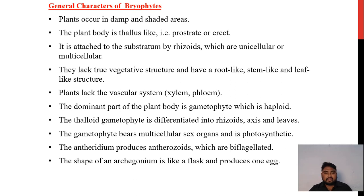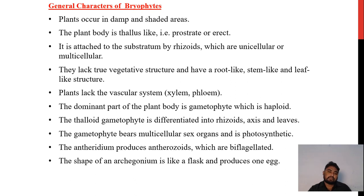The general characteristics of Bryophytes: the plants occur in damp and shaded areas. The plant body is thallus-like, prostrate or erect. It is attached to the substratum by rhizoids which are unicellular or multicellular. They lack true vegetative structures and have root-like, stem-like and leaf-like structures. Plants lack the vascular system.